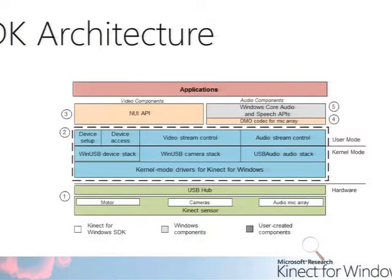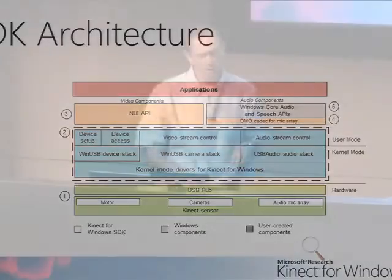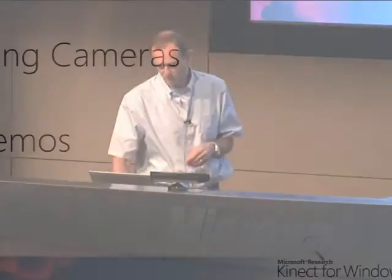We do provide what we call a DMO — a DirectX Media Object — giving you advanced control over sound source localization, echo cancellation, gain control, and so on. That goes up into the standard Windows core APIs. On the left-hand side, we have what we call the NUI API — the Natural User Interface API — which is the runtime and API allowing full control and access to the other features on the Kinect device: motor control, VGA camera, depth camera, and so on. You build your applications on top of this runtime.